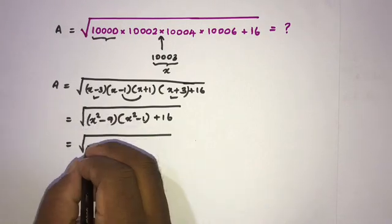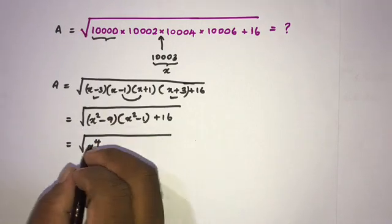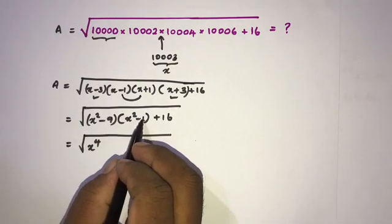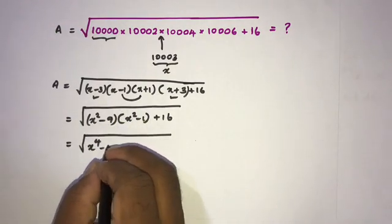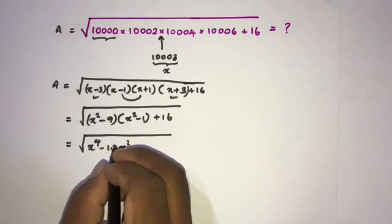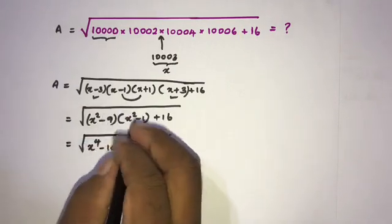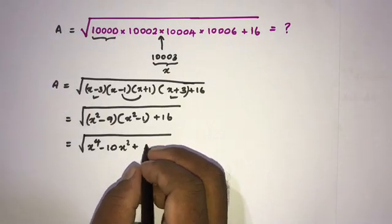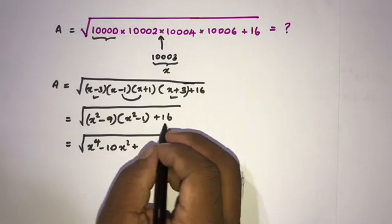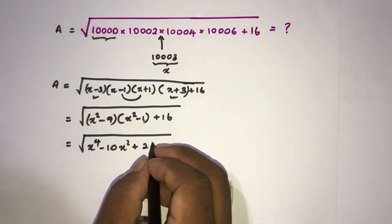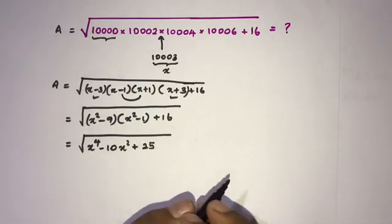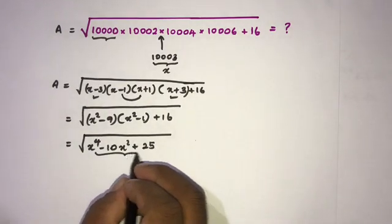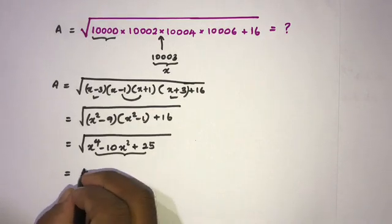Expanding: (x² − 9)(x² − 1) gives x⁴ minus 10x² plus 9. Adding 16 gives x⁴ minus 10x² plus 25.